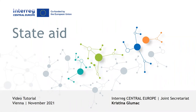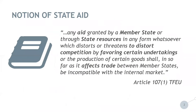Public support granted by the Transnational Cooperation Programme Interreg Central Europe must comply with the State Aid Rules of the European Union, which are applicable at the point in time when public support is granted — that is, when the ERDF funds are granted to the project. Speaking about the applicable rules, it is the Treaty on the Functioning of the European Union, Article 107, which answers the question: when does State Aid occur?